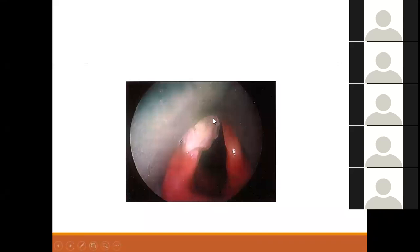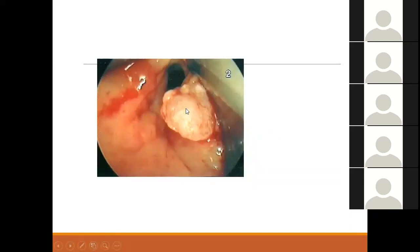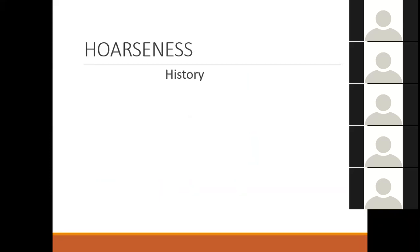On endoscopy, a whitish patch on the vocal cord is leukoplakia — a pre-malignant condition, as discussed in the oral cavity. A picture also shows a growth in the right vocal cord. This lecture is straightforward: know the causes of hoarseness, and when taking history ask about the duration — is the hoarseness constant or intermittent? Constant hoarseness suggests an organic problem such as a polyp, nodule, growth, or vocal cord palsy.